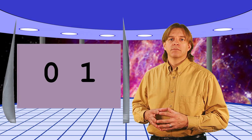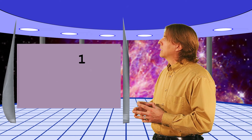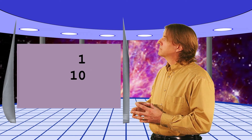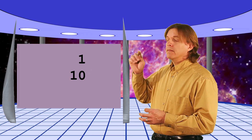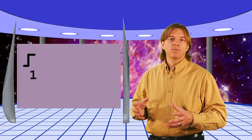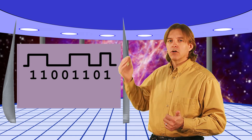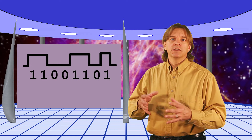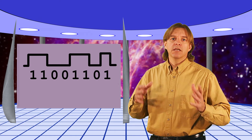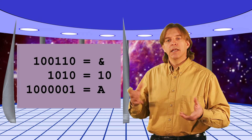Binary number systems use just zero and one to represent numbers. For example, this means one, and this means two, and this means ten. Computers use either the presence or the absence of a voltage to indicate either zero or one, and they build sequences of these up into numbers to represent symbols, numbers, and letters.